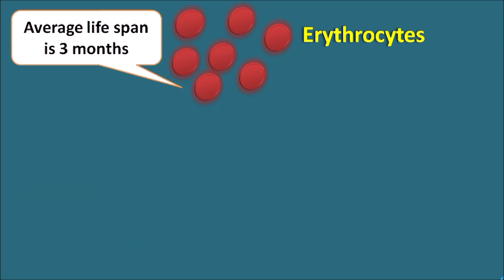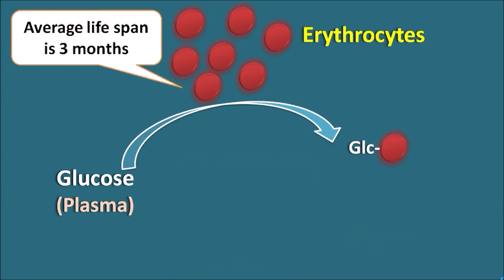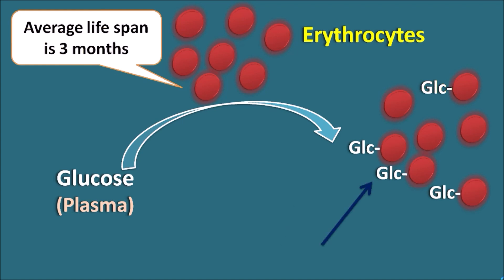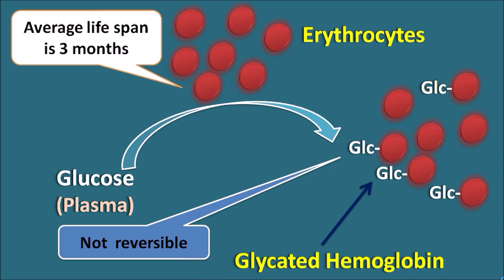Suppose these are the erythrocytes. Now these erythrocytes have an average lifespan of three months, and when the glucose in the plasma reacts with these erythrocytes, it forms the glycosylated hemoglobin or glycated hemoglobin, such that in a few of the erythrocytes hemoglobin is going to be attached with the glucose and a few of the hemoglobins are unreacted. Glycated hemoglobin cannot be detached very easily, and the process is somewhat reversible, so they can be present for the three months — the entire lifespan of the erythrocytes. That is why glycated hemoglobin indicates the average levels of glucose for the last three months.